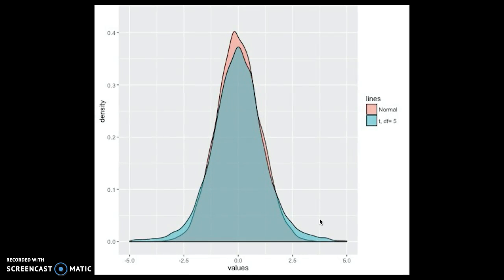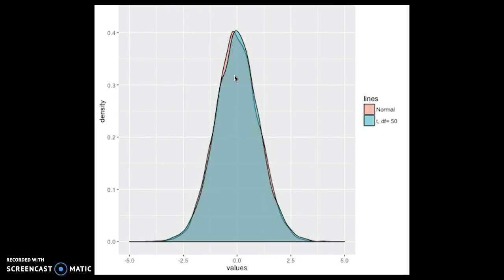Just going through those again, you can see much fatter tails when the degrees of freedom are low. The normal distribution has a higher peak. As those degrees of freedom get bigger, it becomes very difficult to tell the difference between the two distributions.